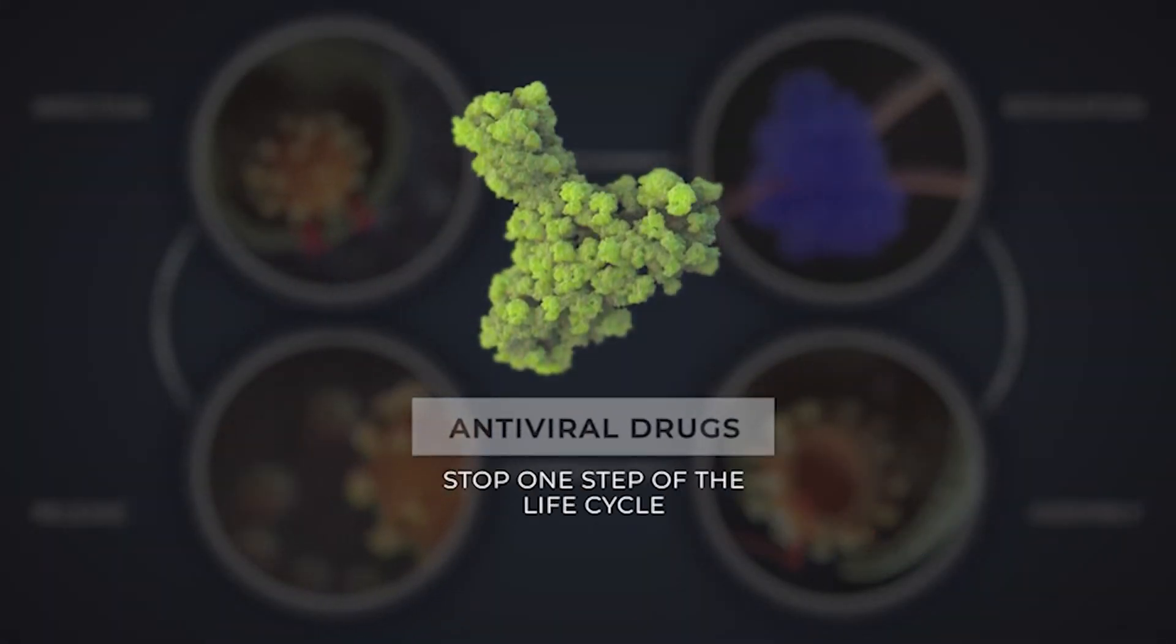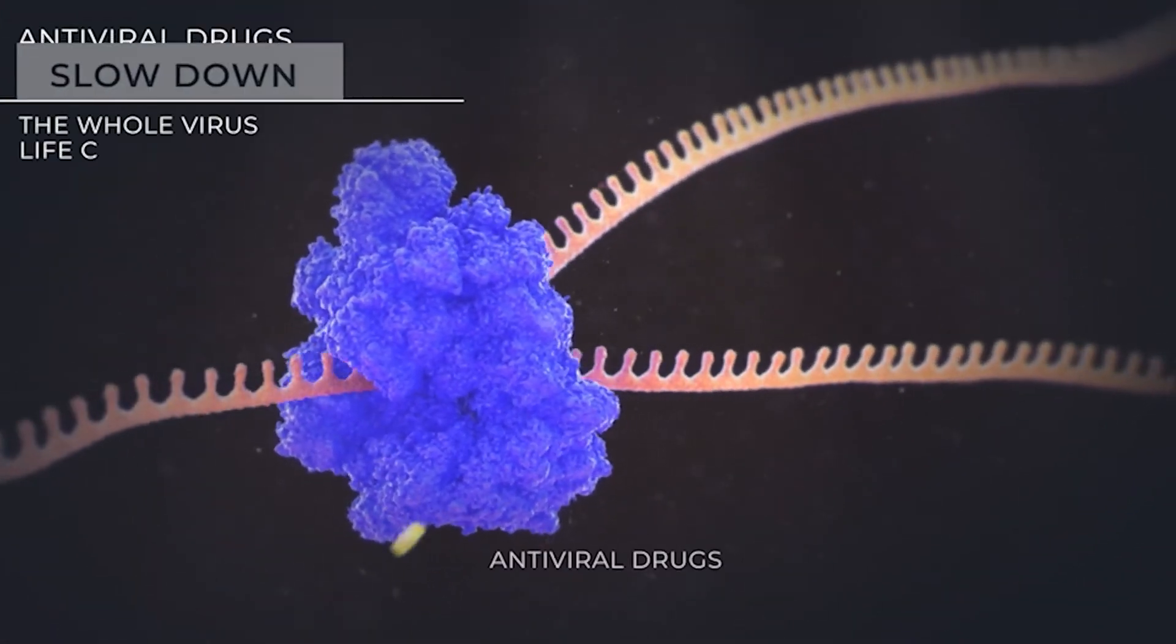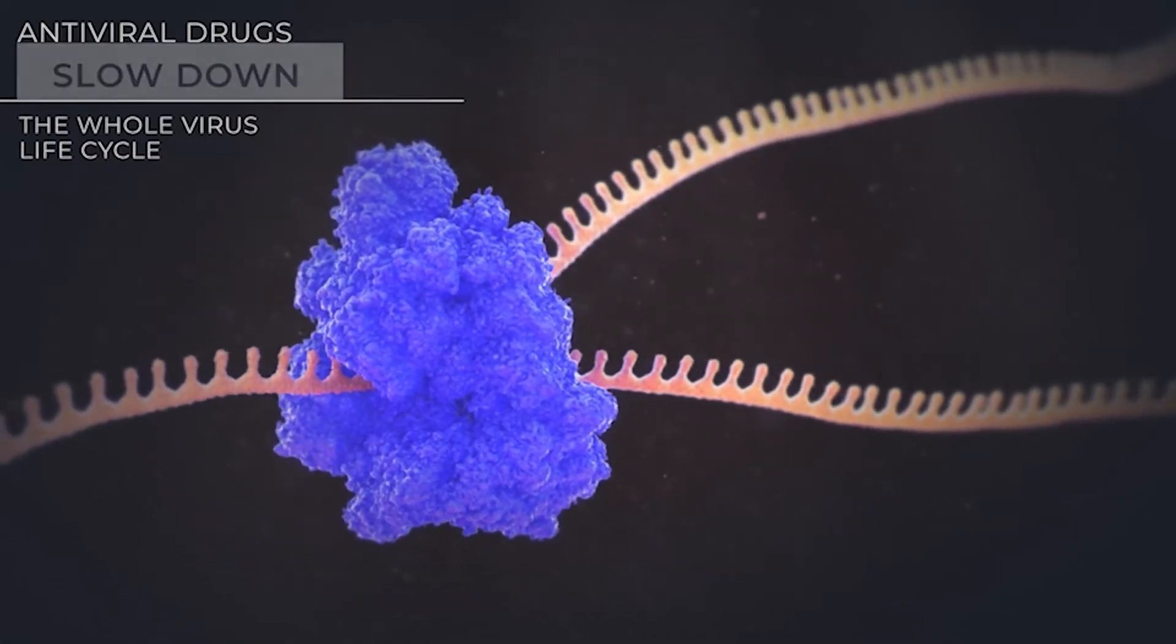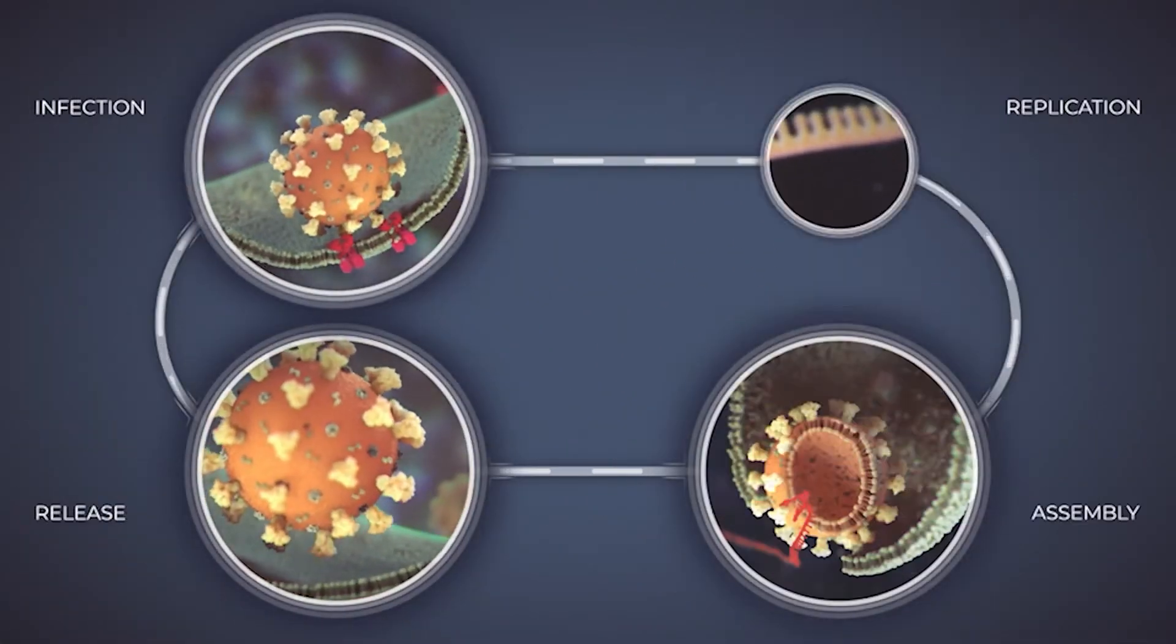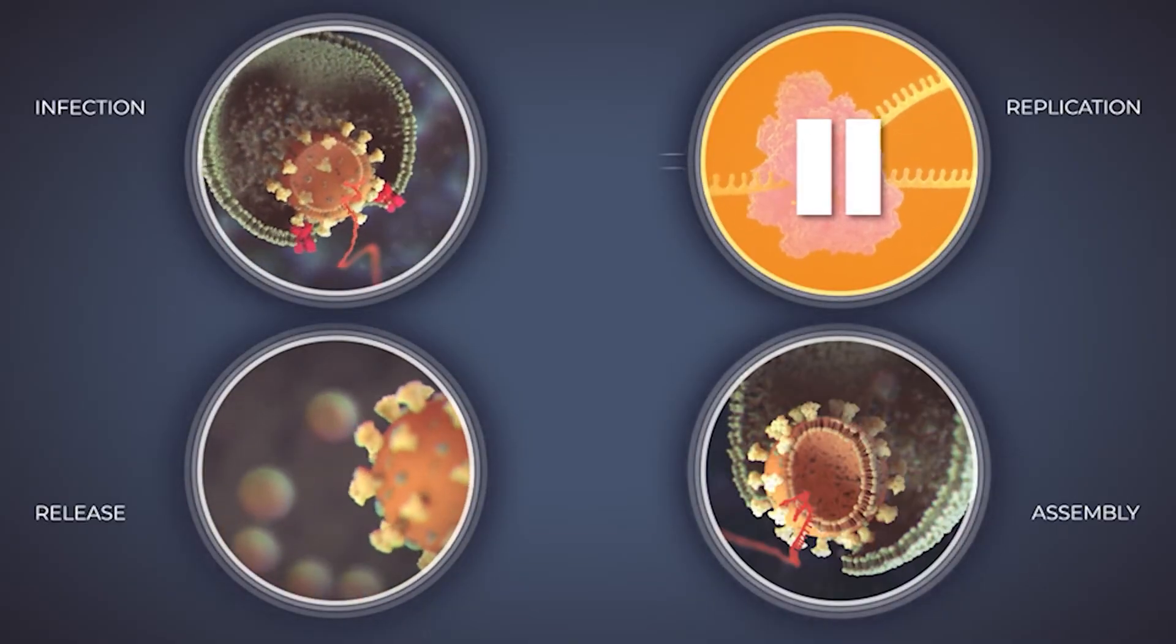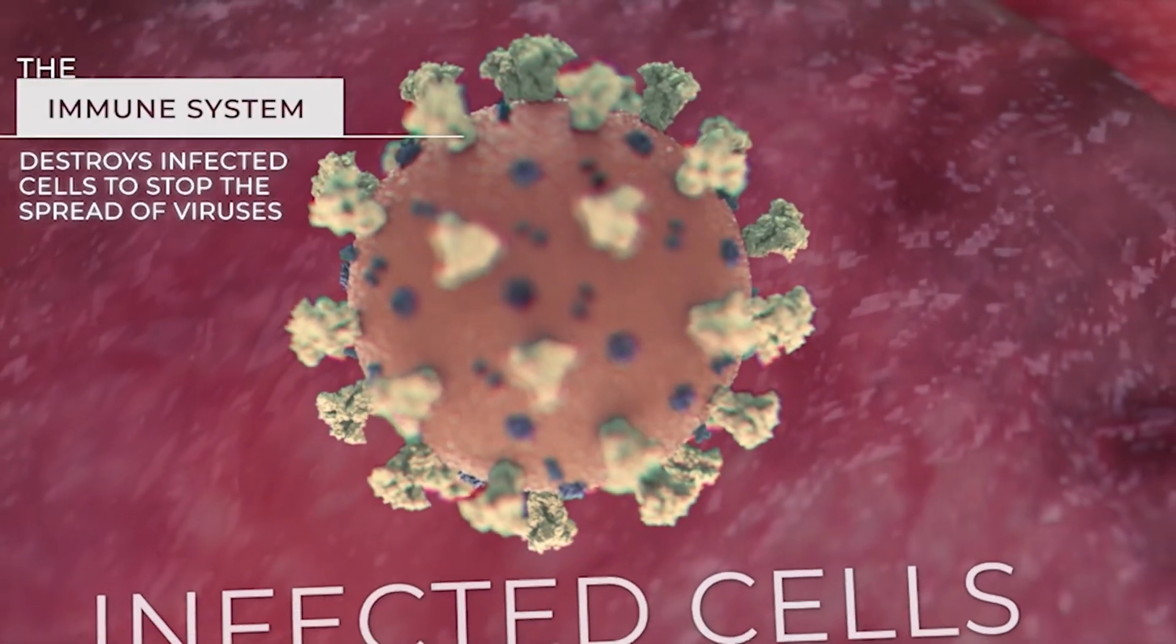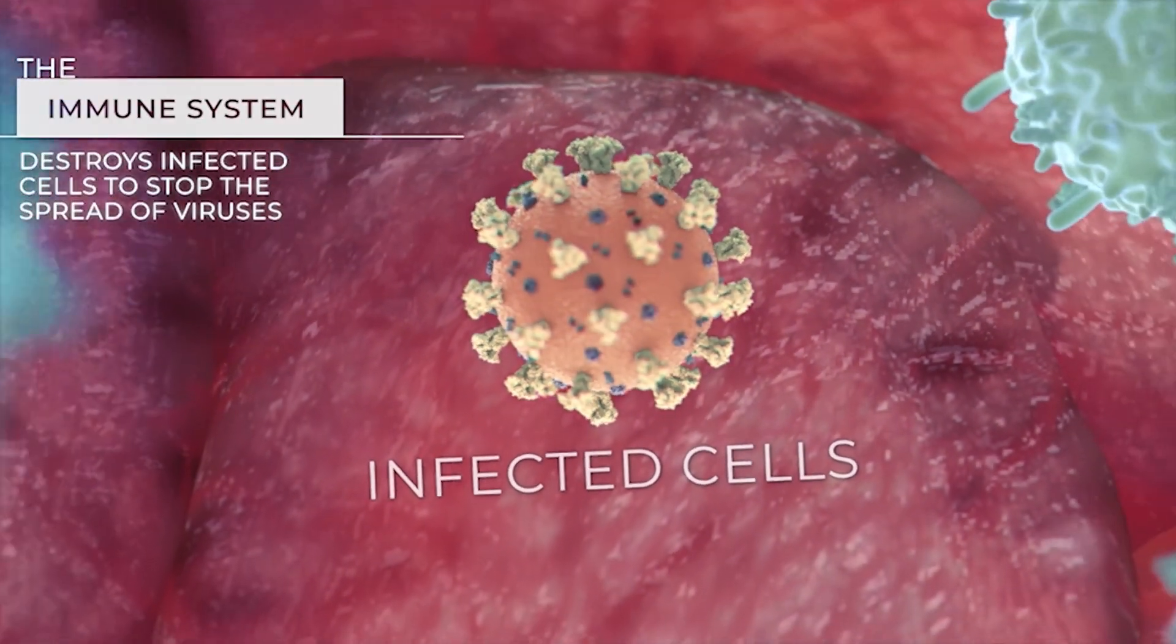Antiviral drugs don't kill viruses, but are able to stop one step of the virus's lifecycle. For example, a drug that inhibits replication slows down the virus lifecycle to a speed that the immune system can manage. This makes it easier for the immune system to control the spread of viruses and kill infected cells.